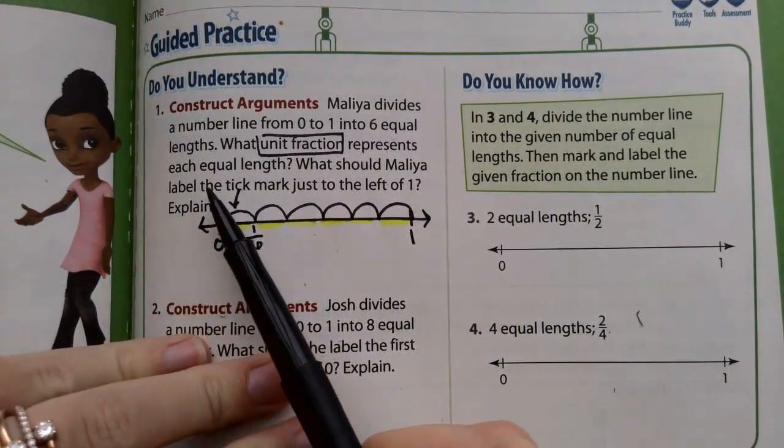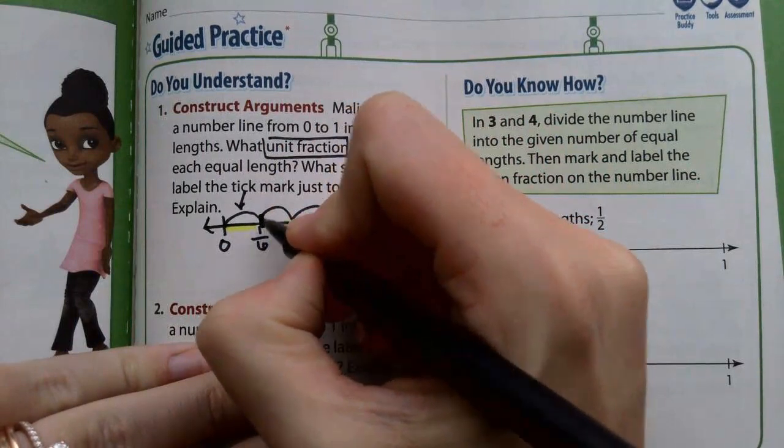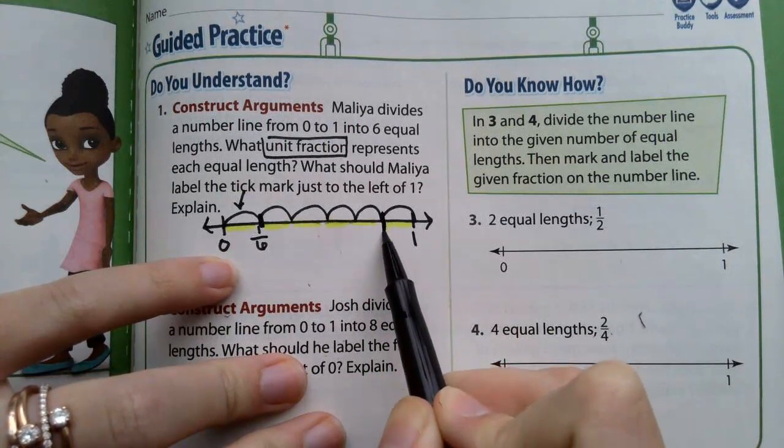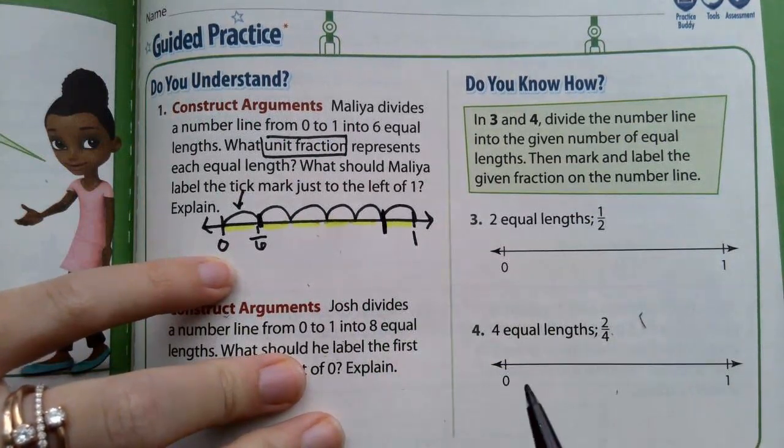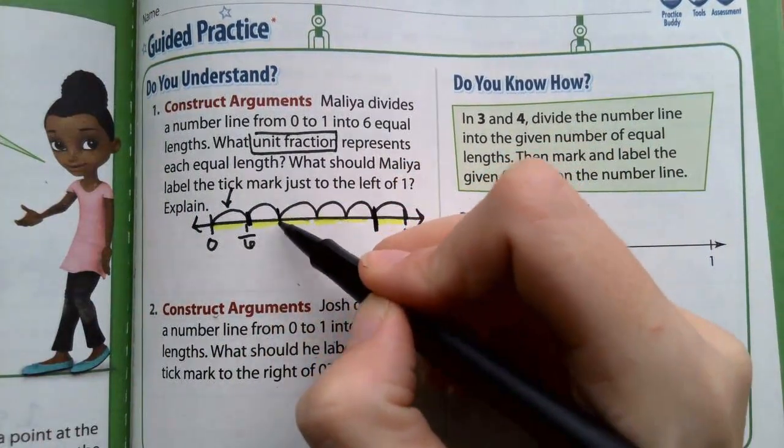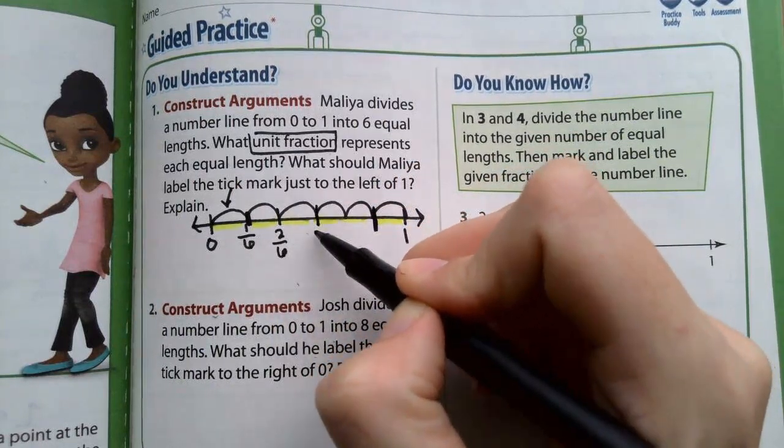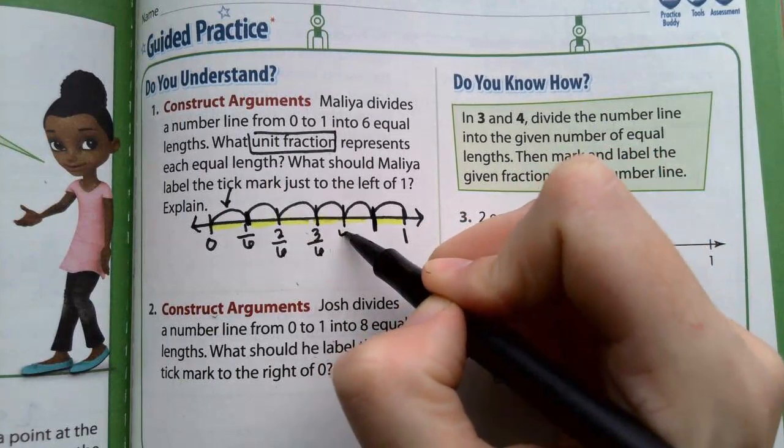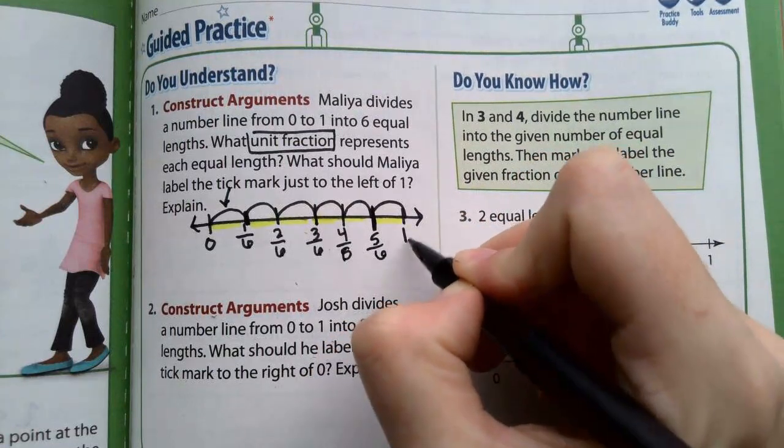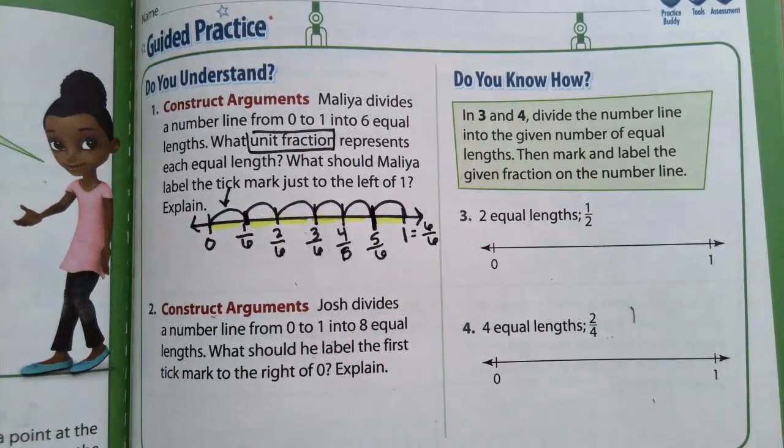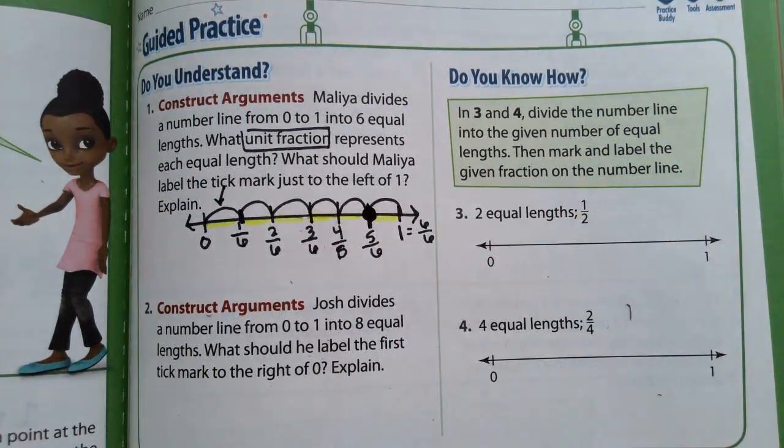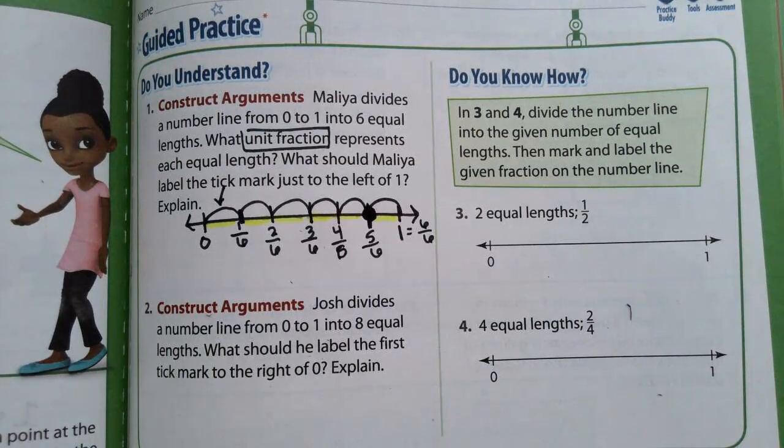Then what should Malia label the tick mark to the left of 1? So that is this one right here. So what is this point? Well, I have to label my fractions. 1 hop out of 6, 2 hops out of 6, 3 hops out of 6, 4 hops out of 6, 5 hops out of 6, and this would be my whole 6 out of 6. So what does this tick mark represent? What fraction? Go ahead and write out the fraction now.